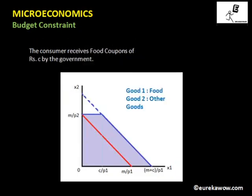Now consider the case where the consumer receives food coupons of rupees c from the government. First, if the government gave rupees c in cash, the budget line would shift outward parallely. But since these are food coupons that can only be spent on food and are non-tradable, the budget line behaves differently — represented by the solid blue line in the diagram.